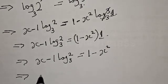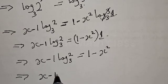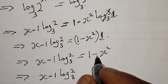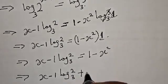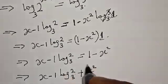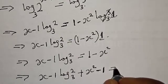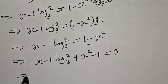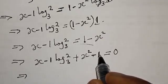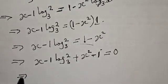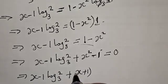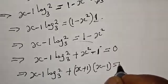This implies that x minus 1 times log 2 equals 1 minus x squared. Bringing minus x squared to the other side gives plus x squared, and bringing plus 1 to the other side gives minus 1, so everything equals 0. Now, x squared minus 1 is a difference of two squares, which can be expressed as x plus 1 times x minus 1.